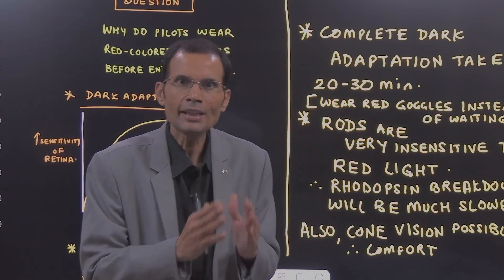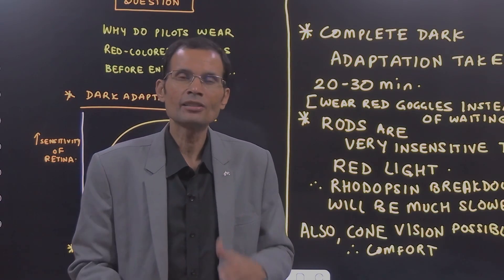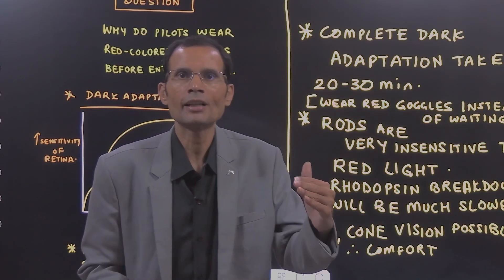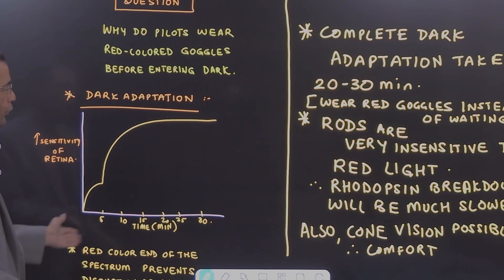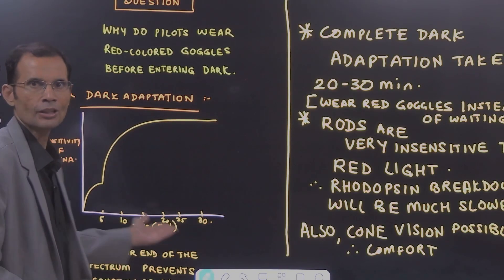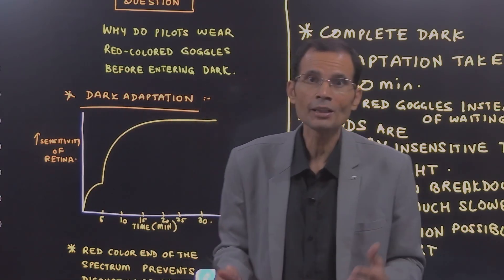A main theme in that is that there is increased sensitivity of the retina. If this question comes, you will have to draw the dark adaptation graph, the curve because it will be a three marks question.